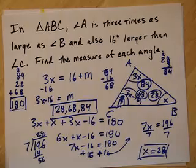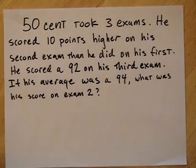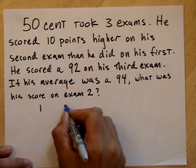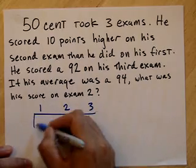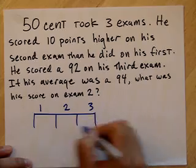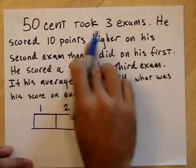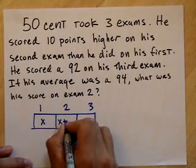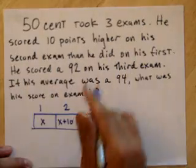And finally, we have about one minute and a half to do this one. This is going to be tough. All right. 50 Cent took 3 exams. He scored 10 points higher on his second exam than he did on his first. He scored a 92 on his third exam. If his average was a 94, what was his score on exam 2? Well, let's see. He had exam 1, exam 2, and exam 3. Let's see how he did. He scored 10 points higher on his second exam than he did on his first. So I can call his first x. This one x plus 10. And he scored a 92 on his third.